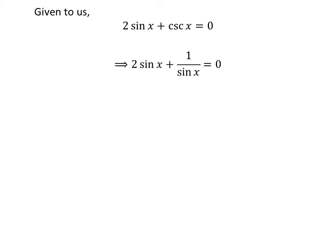We know csc x equals 1 over sin x, so we can rewrite the above statement as 2 sin x plus 1 over sin x equals 0.